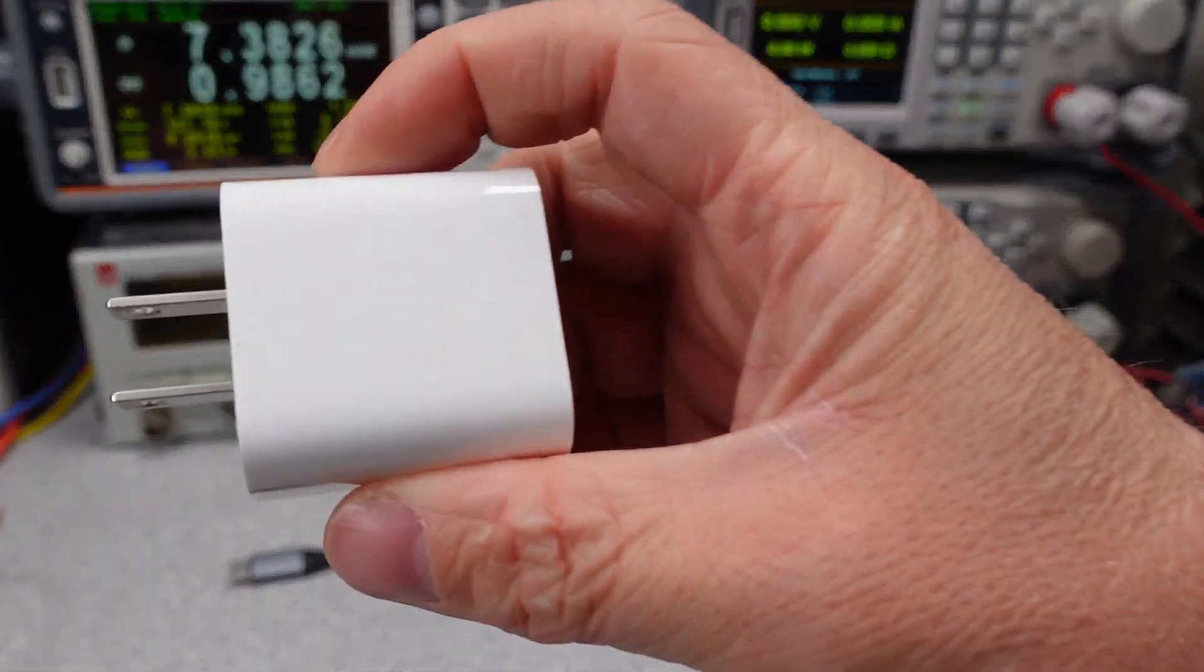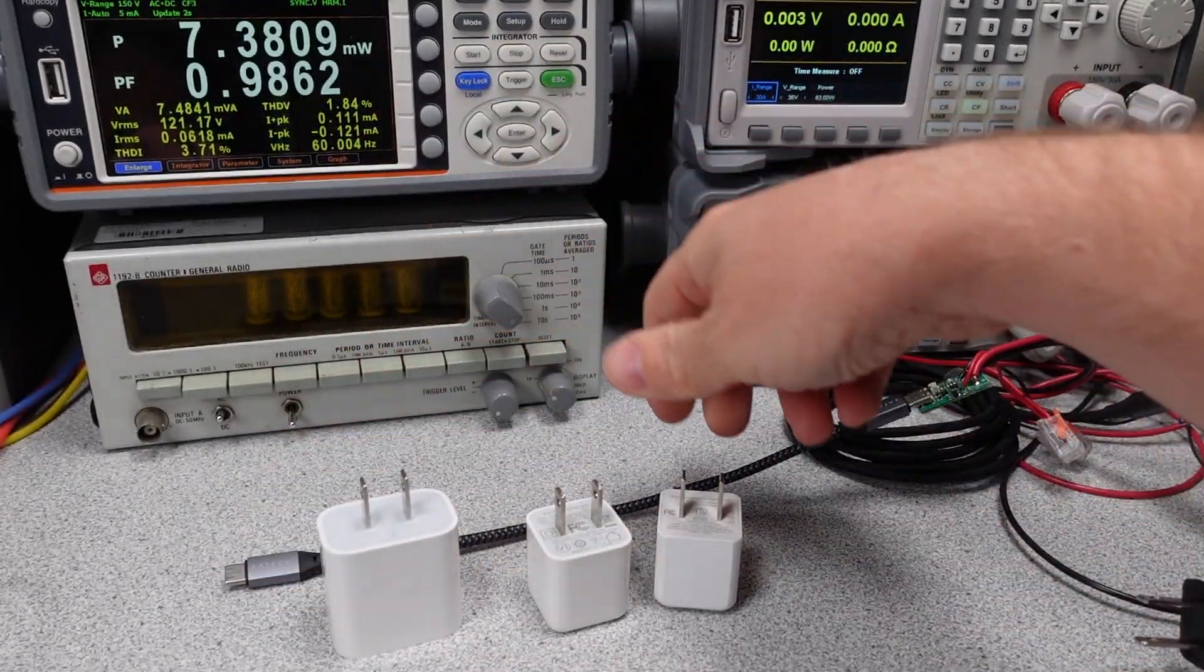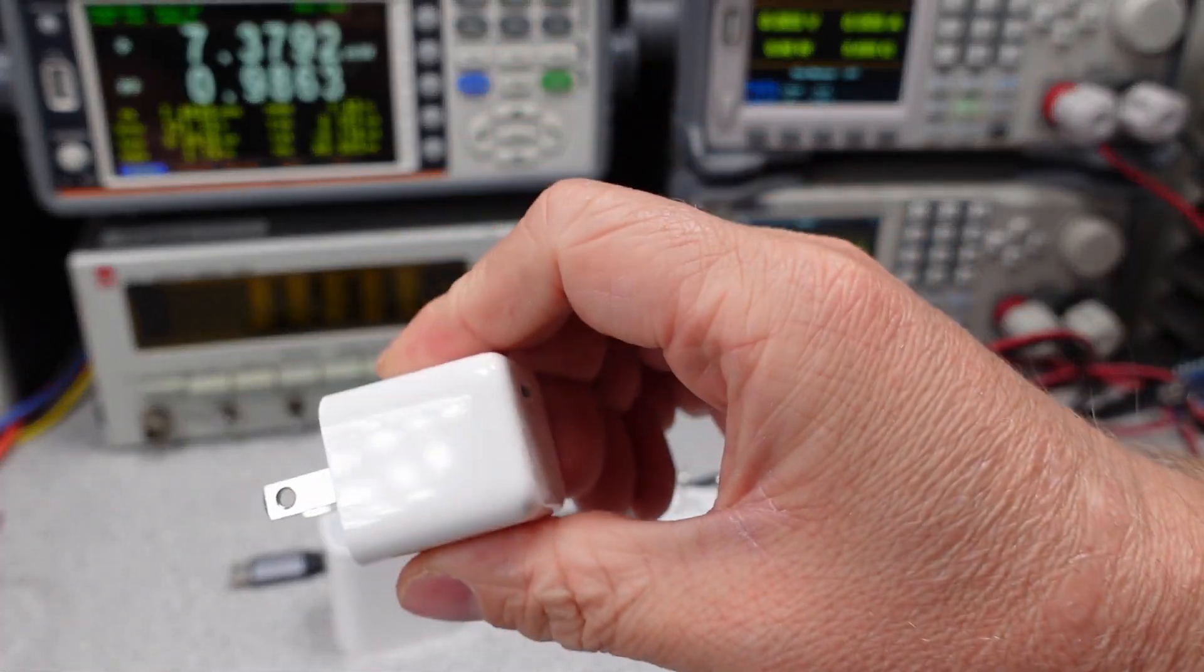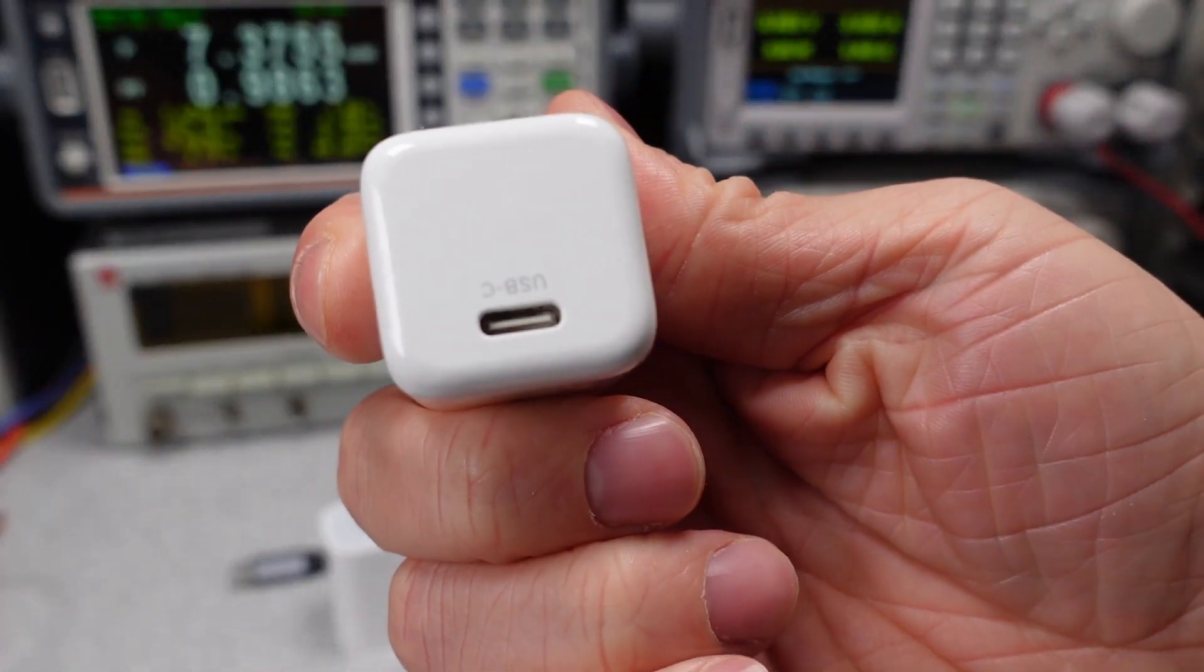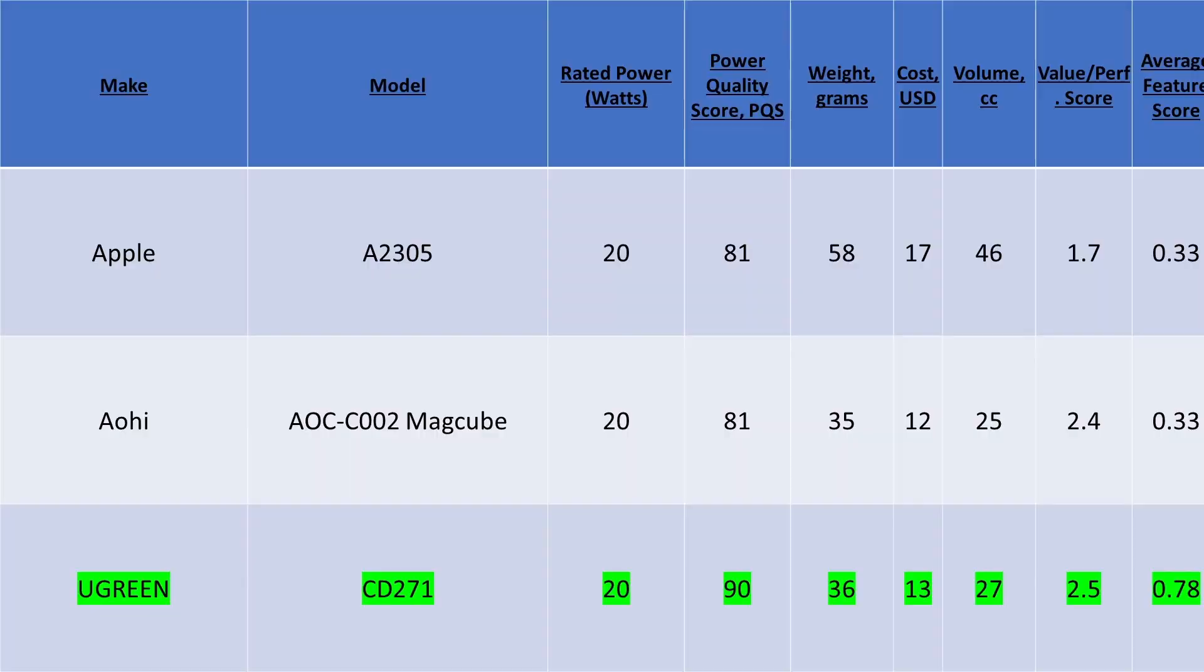For 20 watt adapters, the Ugreen CD241 is still the category champion. It has the best efficiency and overall power quality of any other devices, and it is also tiny and lightweight. Oh, and it's also really inexpensive. You get quality, and you get it for cheap.